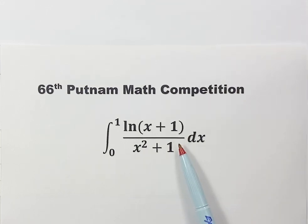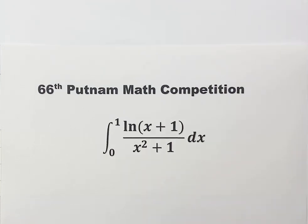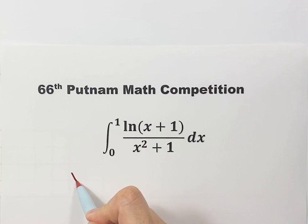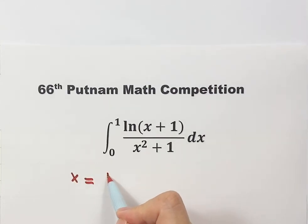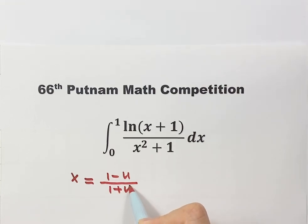Because here we have a fraction — the numerator is x+1 and the denominator is x²+1 — I want to try the substitution x = (1-u)/(1+u), and we want to see what happens.